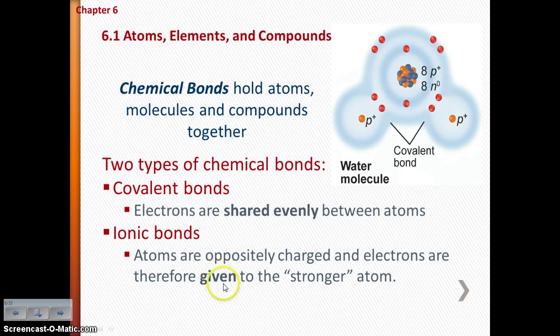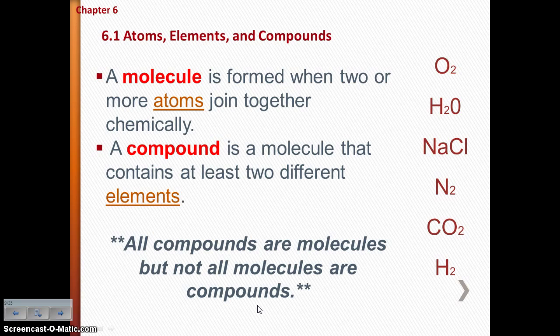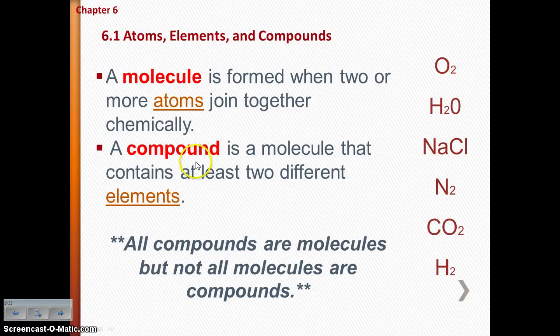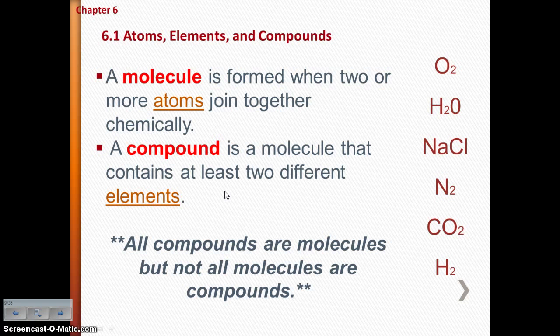A molecule is formed when two or more atoms join together chemically — those atoms can be the same or different. A compound is a molecule that contains at least two different elements. So all compounds are molecules, but not all molecules are compounds. Fill in your Venn diagram for this distinction on your notes organizer.